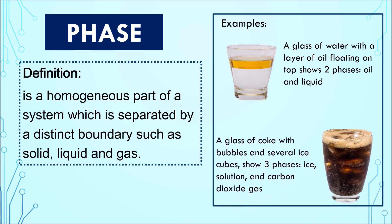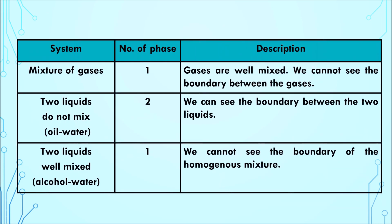Next, when you have a glass of coke with bubbles and several ice cubes, it shows three phases: ice, solution and carbon dioxide gas. Here are few examples for you to read through.